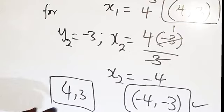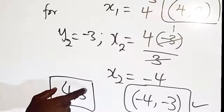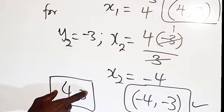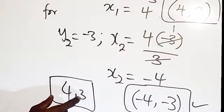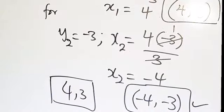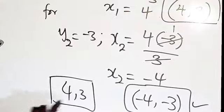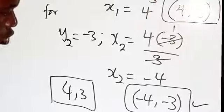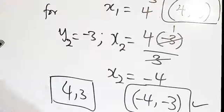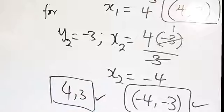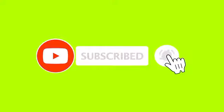We have two solution pairs: (4, 3) and (minus 4, minus 3). To verify, substitute x1 and y1 back into the original equations and check they are satisfied, then do the same for x2 and y2. Thank you so much for watching. If you enjoyed the class, share it with your colleagues and consider subscribing to the YouTube channel and clicking the bell icon.